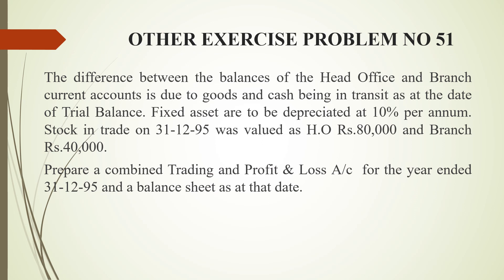The difference between the balance of the head office and branch current account is due to goods and cash being in transit as at the date of the trial balance. Fixed assets are to be depreciated at 10% per annum for both head office and branch, and closing stock figures are also given for both.